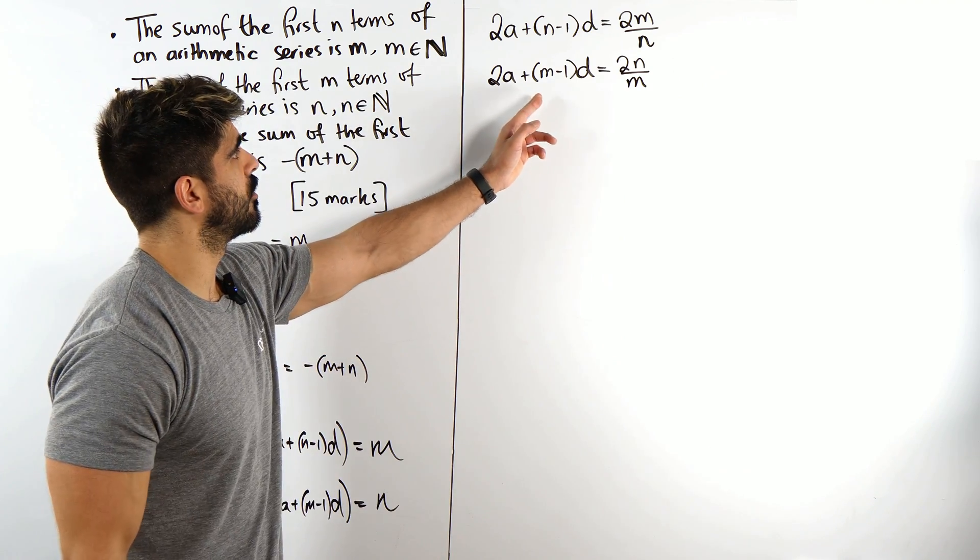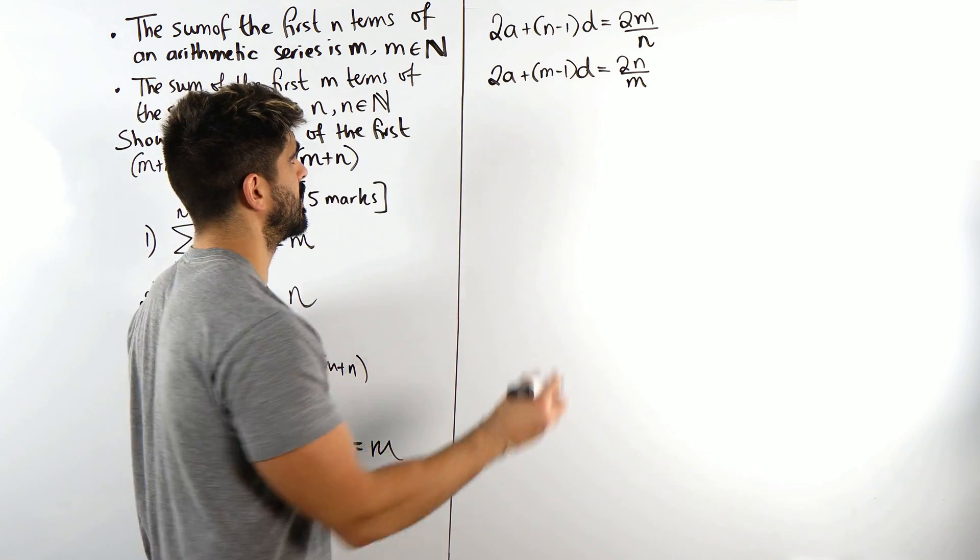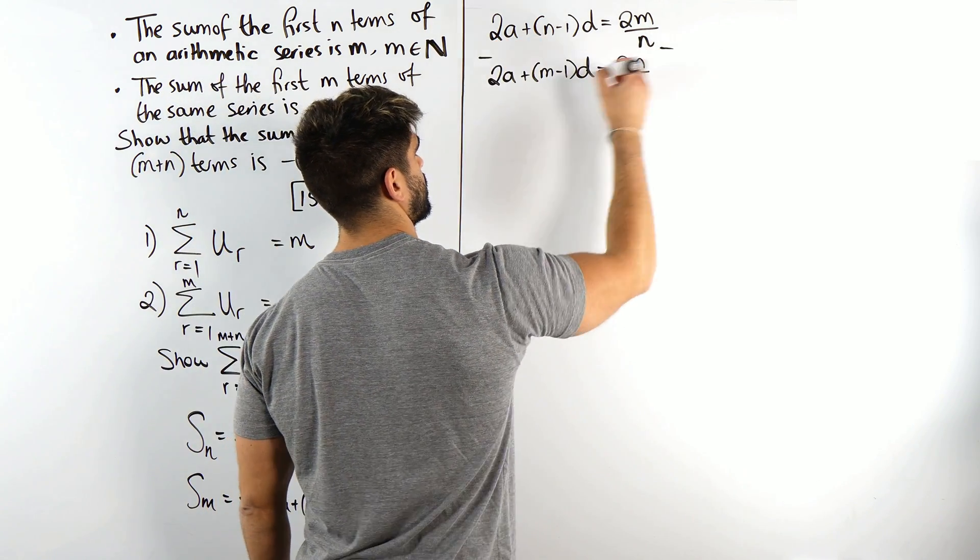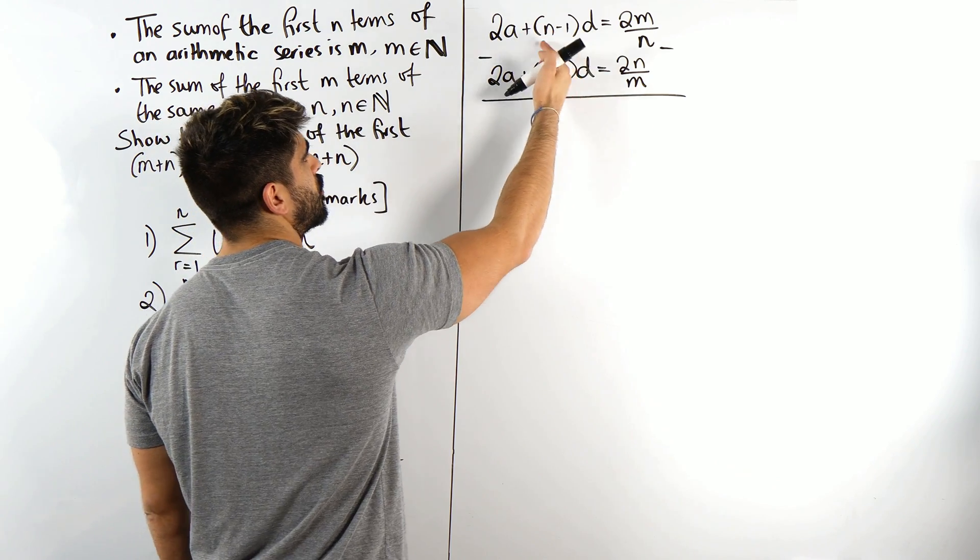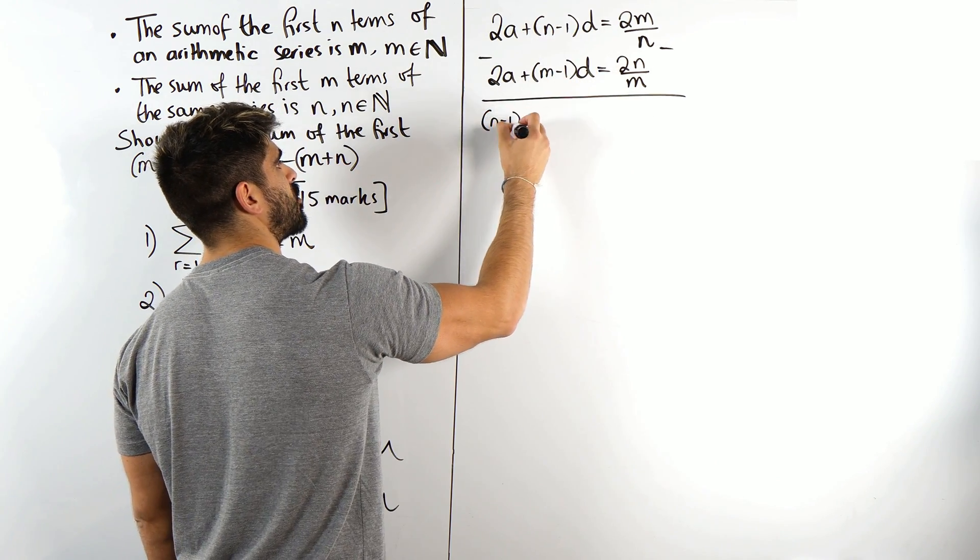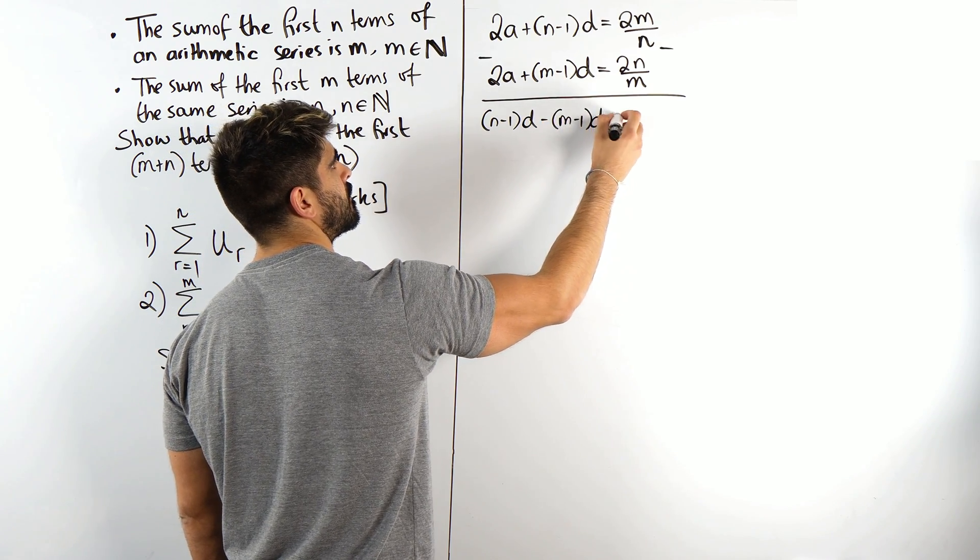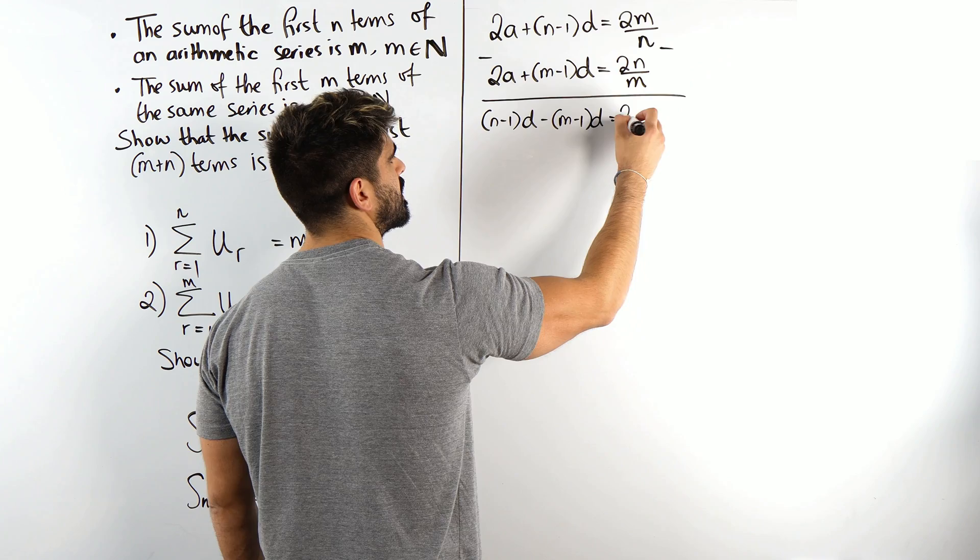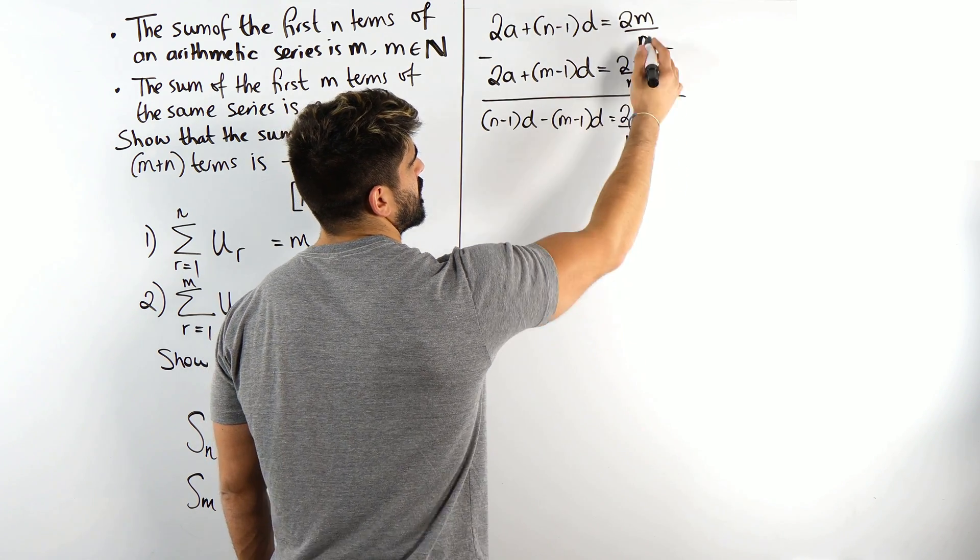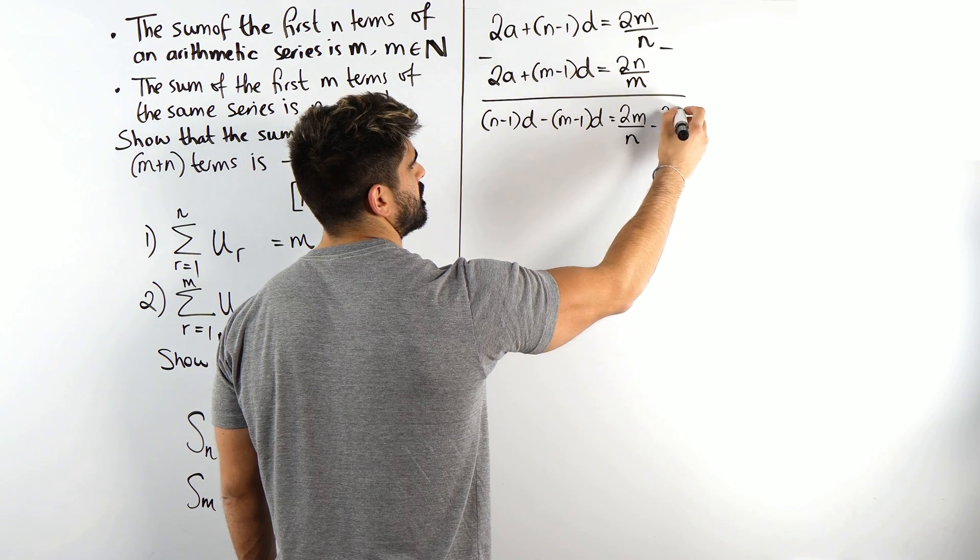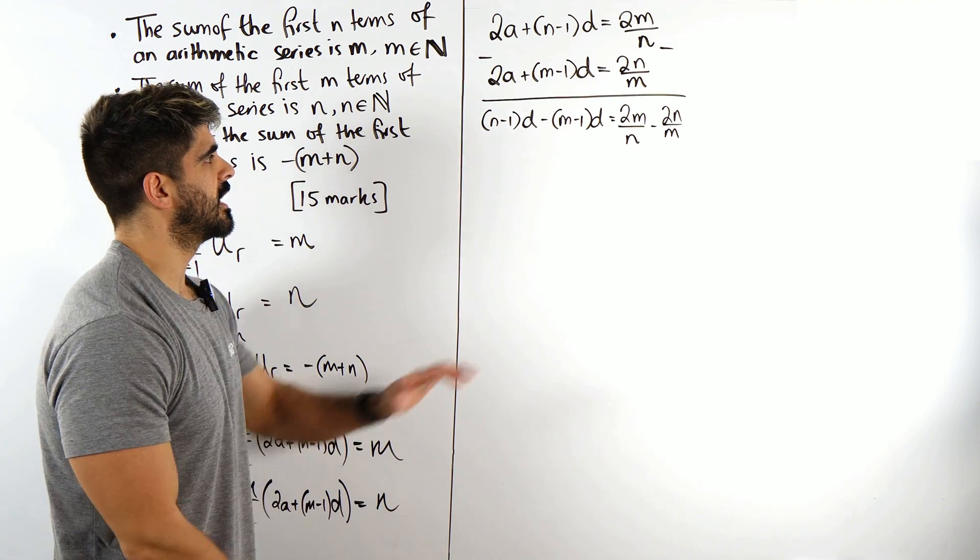And I guess the easiest way to do that is to multiply through by 2 divided by n to expose the a's and we'll do the same thing here. So for my first equation, I'm going to get 2a plus n minus 1 times d is 2m over n. And then for this one, I'm going to get the same thing. 2a plus m minus 1 times d is 2n over m. From here we can very quickly work out what the d is by subtracting the two equations.